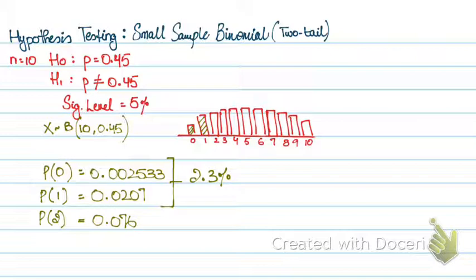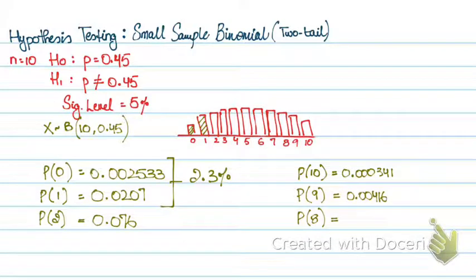So for the right-hand side, I'll calculate the probability of 10. Probability of 10 is 0.000341. Probability of 9 is 0.00416, probability of 8 is 0.0229. So the sum for these two is 0.004501.